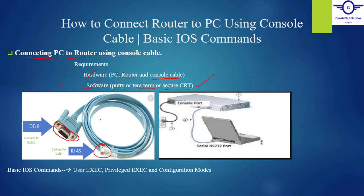Suppose we want to configure the router: the RJ45 connector will be inserted into the router while the VGA connector will be inserted into the PC. We will use one of these software — either Putty, TeraTerm, or SecureCRT — to configure the router. We will obtain the router interface using either of these software. We mostly use Putty to obtain the router or device interface on our PC so that we can configure that device from our PC using a console cable.